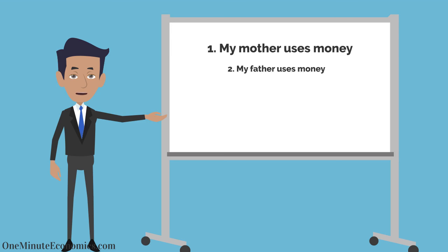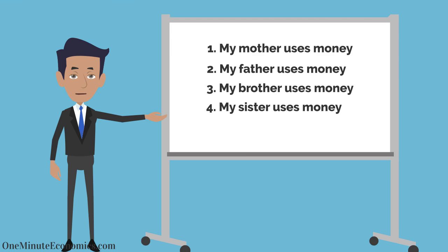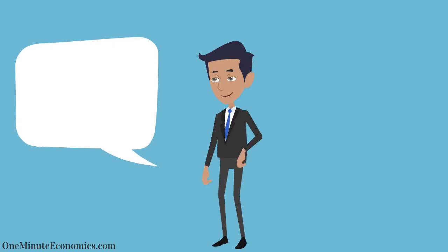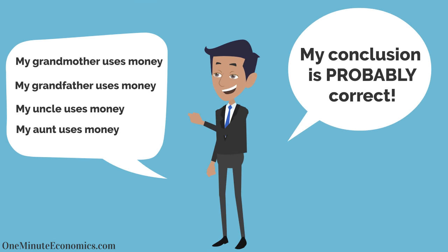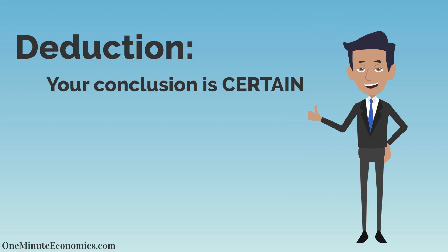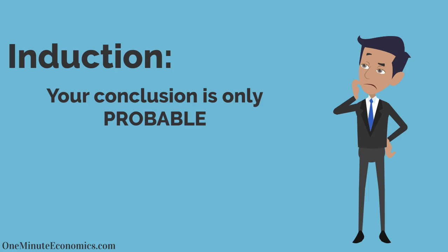Let's move on to an induction example. I make the following specific statements: one, my mother uses money; two, my father uses money; three, my brother uses money; four, my sister uses money. From these specific premises I draw the general conclusion that all my relatives use money. The more examples I think of, the more probable my conclusion becomes. With deduction, your conclusion is certain if your premises are true. However, with induction, your conclusion is only probable if the premises are true.